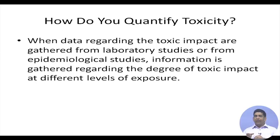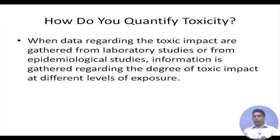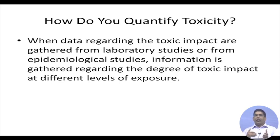Data regarding toxic impact is gathered from laboratory studies or from epidemiological studies. Epidemiological data comes from exposure to human populations — for example, arsenic exposure data from Bangladesh, Taiwan, and Vietnam. The information is gathered and we look at the degree of toxic impact at different levels of exposure. Since we cannot ethically expose humans to different levels, we rely on animal studies and extrapolate to humans.